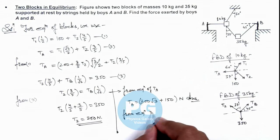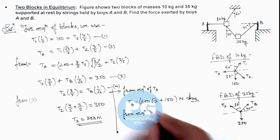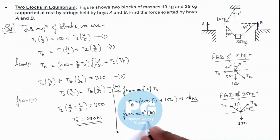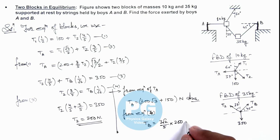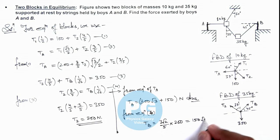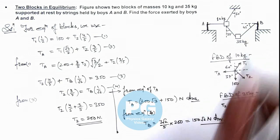Similarly, from equation 4, the value of T_B is (3√2/5) × T2, which is (3√2/5) × 250 newtons. This gives T_B = 150√2 newtons. This is the force exerted by boy B on the string.